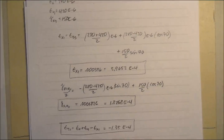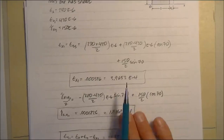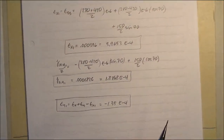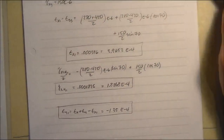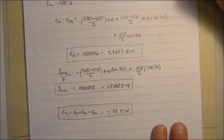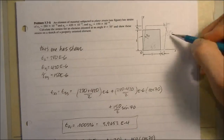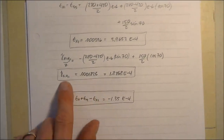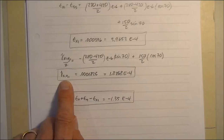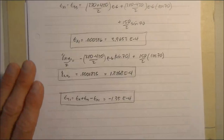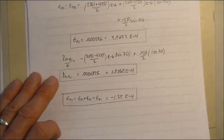What's being calculated here is all of the strains. There's some strain along the x1 axis, some strain in the y1 axis (epsilon y1), and also some shear strain — all calculated from the strain transformation equations. So those are fairly simple computations.